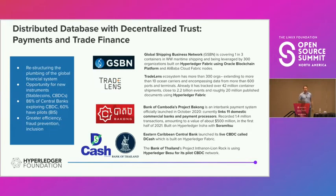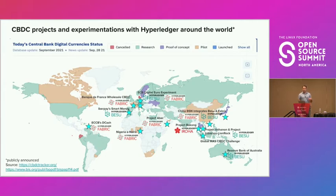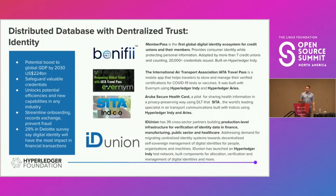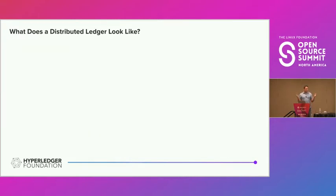Just to show how widely this technology has been adopted — and this is just Hyperledger, there's an ocean of blockchain applications beyond it. Finance is a big application area where people want distributed databases with decentralized trust. The CBDC — central bank digital currency — landscape is taking the world by storm. Supply chain is another big one. And digital identity is another great case for distributed databases with decentralized trust.